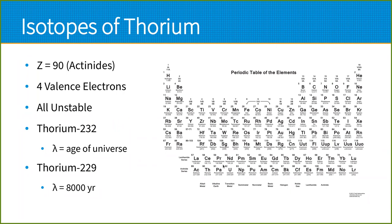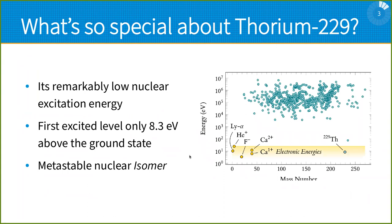Let's try to locate thorium in the periodic table because not everyone may be so familiar with this element. It is in the row of the actinides. It has a nuclear charge of 90, four valence electrons, and all isotopes are unstable. There is a semi-stable one, which is thorium-232, with a half-life of the age of the universe. The interesting nucleus for our purposes has a half-life of 8,000 years: thorium-229.